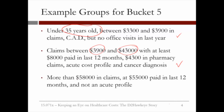A final example of a bucket five patient is more than $58,000 in claims, with at least $50,000 paid in the last 12 months, but not an acute profile.